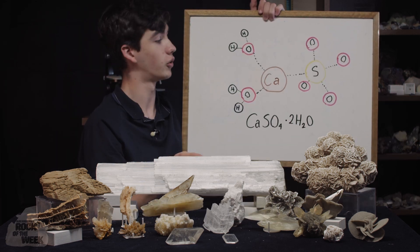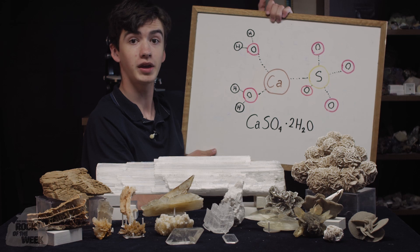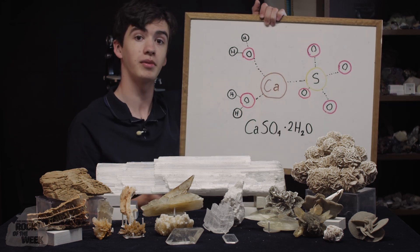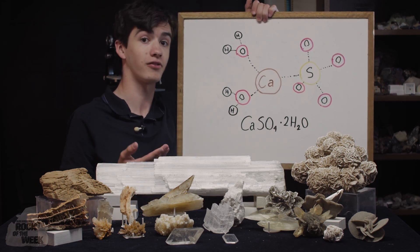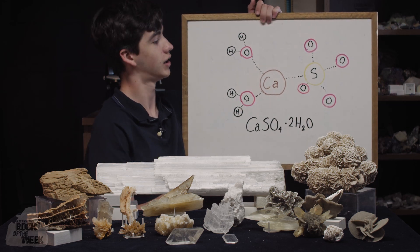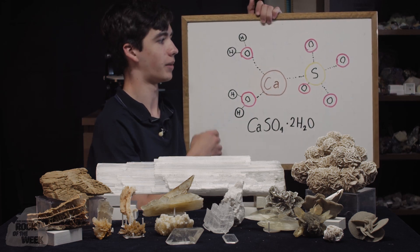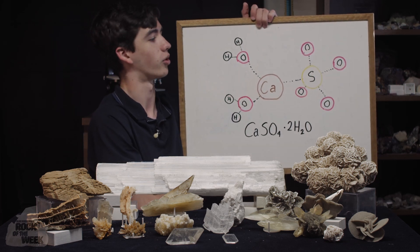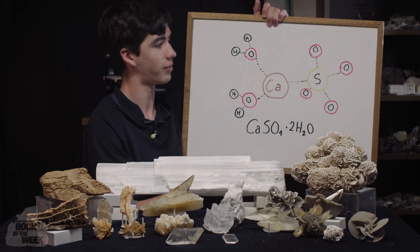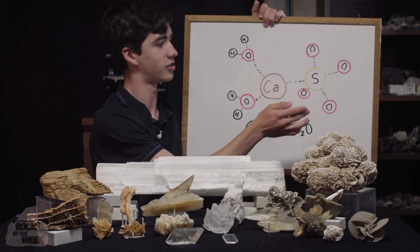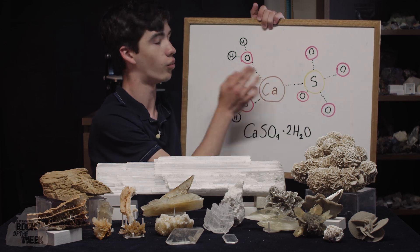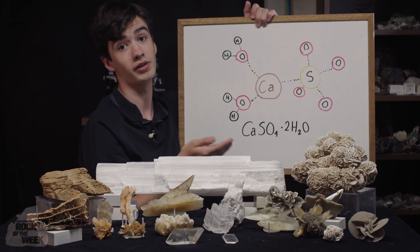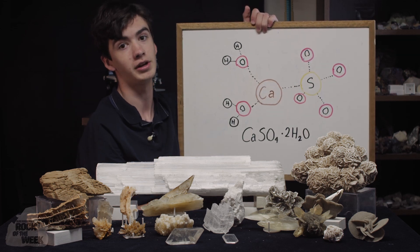The most important component when it comes to crystal making is the calcium, because calcium is a really reactive element. Even though it's surrounded by all of its bonded neighbors, it still wants more, so it grabs onto other sulfate and water molecules in the area, and only then does it feel complete.